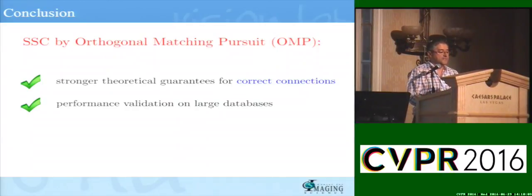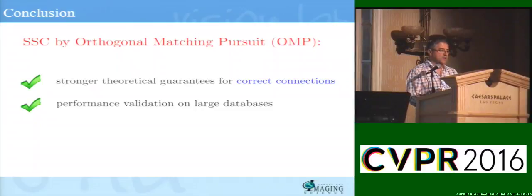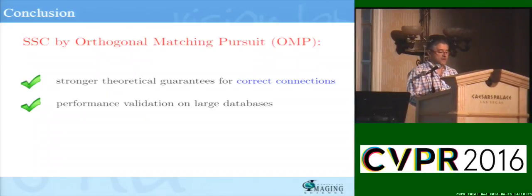To summarize, we have studied the theory of orthogonal matching pursuit for the problem of subspace clustering. We have demonstrated that the algorithm is guaranteed to give correct connections with stronger theoretical guarantees than prior work on OMP. And we have for the first time demonstrated the performance of the method on very large scale datasets in computer vision, going from 10,000 to about 500,000 data points as will be seen in the next talk.